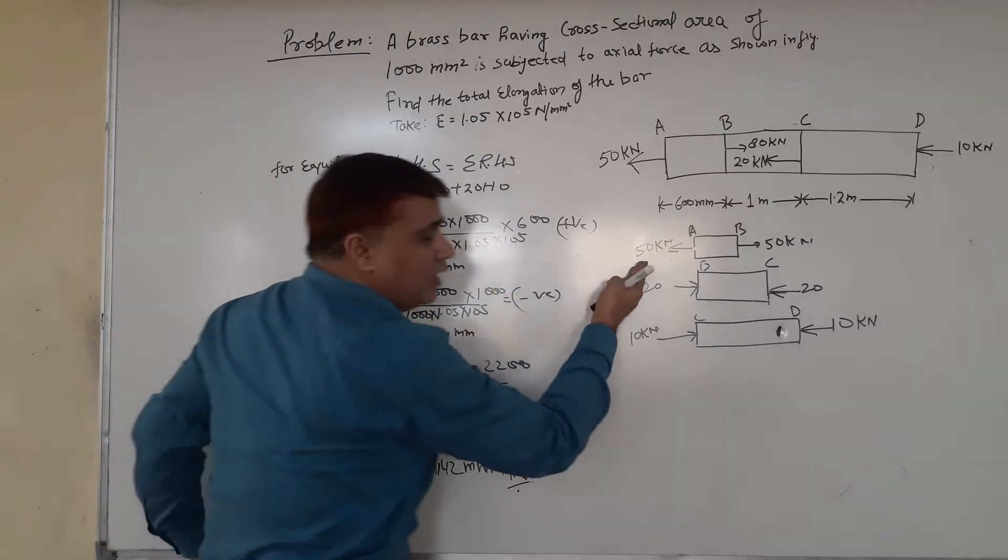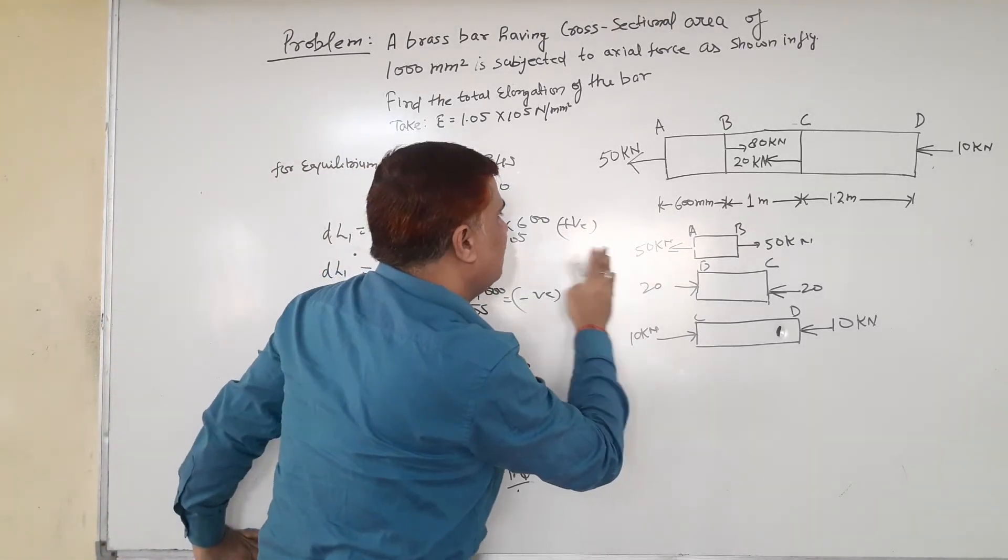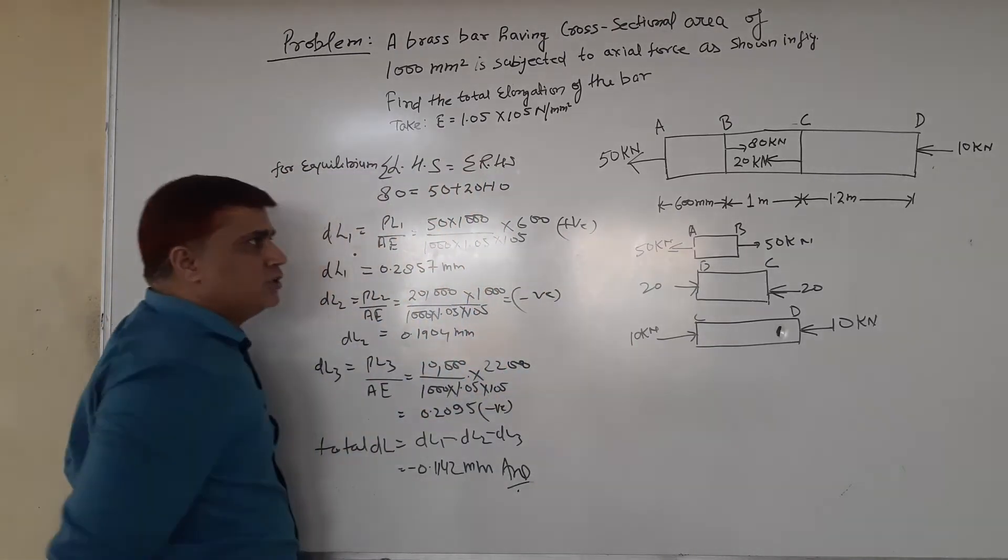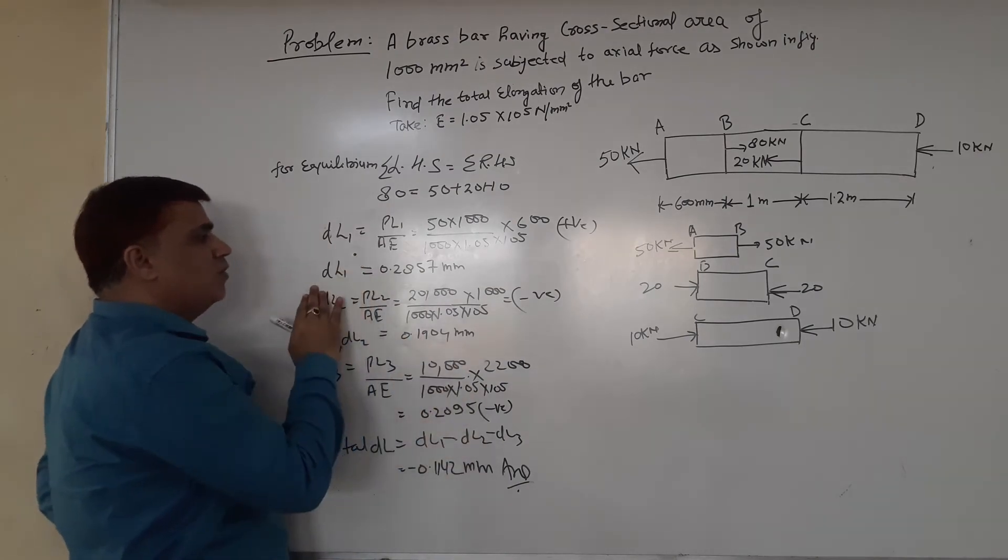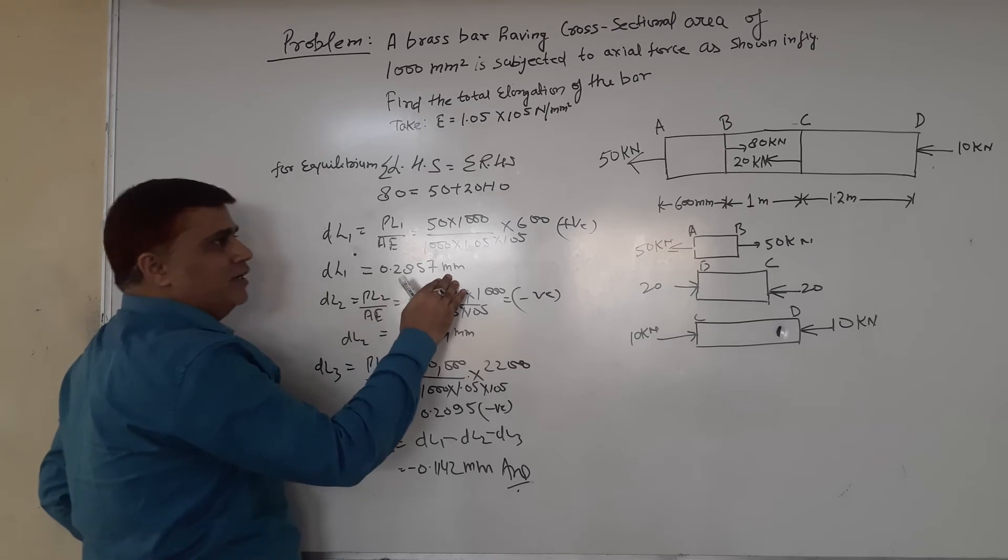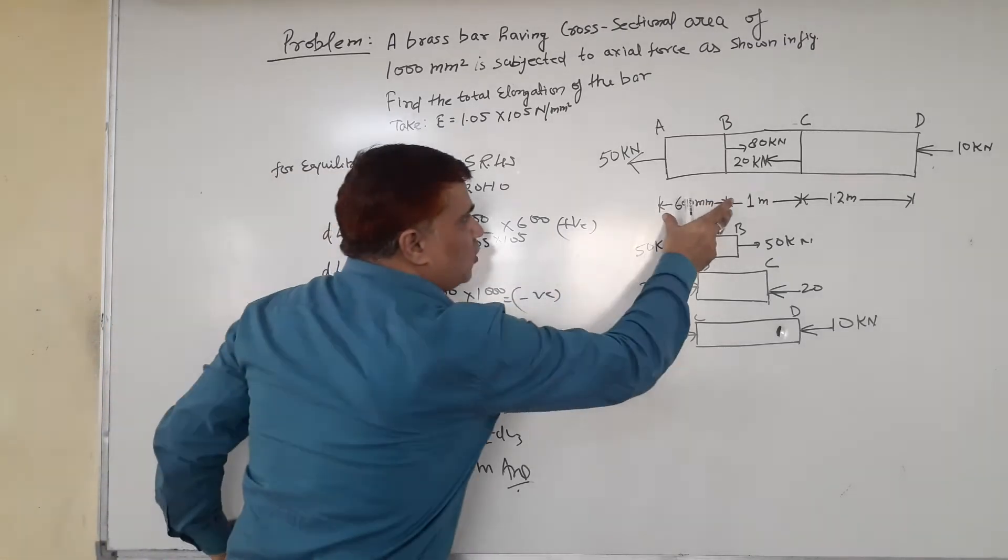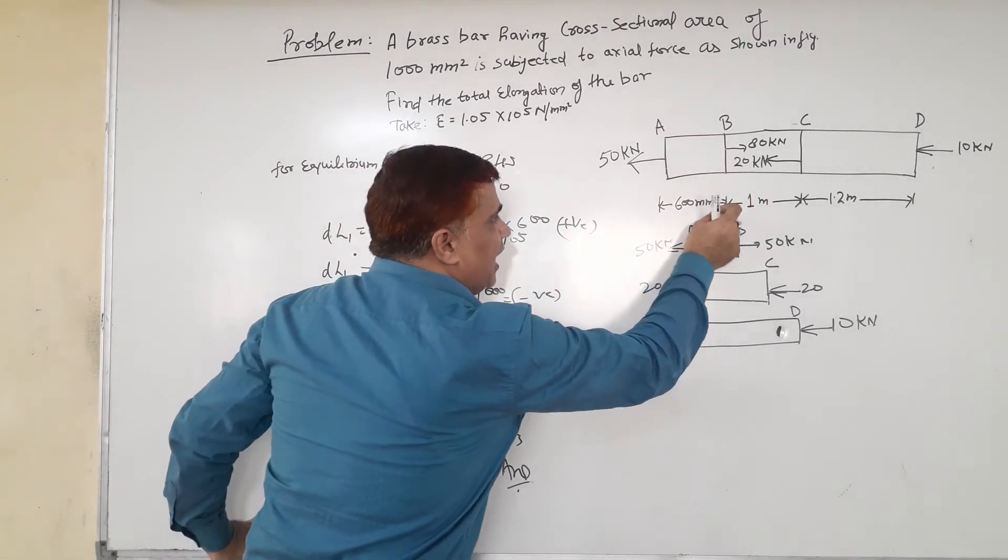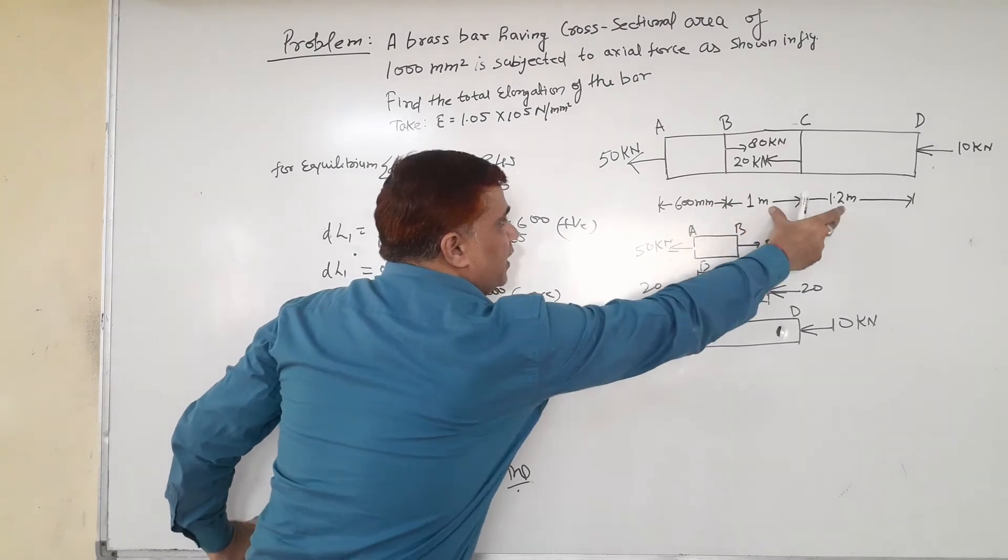We get the value of ΔL₁ = 0.2857 mm. The length of this section is 600 mm, so all dimensions should be in millimeters.